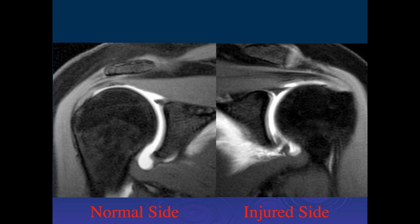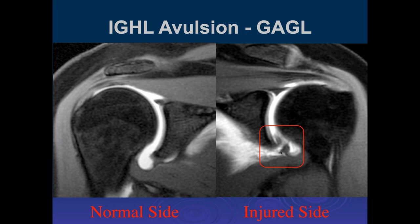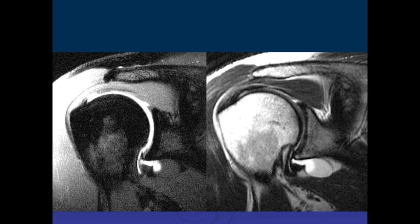Here we have two shoulder arthrograms of the right and left shoulder. On the normal side we can see the normal attachment of the inferior glenohumeral ligament. On the injured side we see avulsion of the inferior glenohumeral ligament with contrast signal intensity extending along it — but this is from the glenoid side, so it's often called a GAGL lesion rather than a HAGL lesion. Another example shows the inferior capsule pulled off along with the inferior labrum, with an associated paralabral cyst.